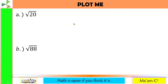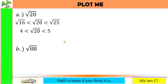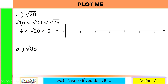Let us have an activity: Plot me. Letter A is square root of 20. The two closest perfect square numbers to 20 are 16 and 25. The square root of 16 is 4 and the square root of 25 is 5. The difference of 20 and 16 is 4, and the difference of 25 and 20 is 5. It means 20 is closer to 16 than to 25. So square root of 20 is closer to 4 than to 5. This is square root of 20.